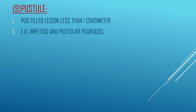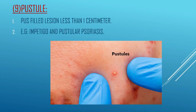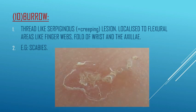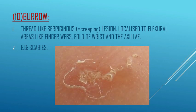The next one is the pustule — as the name suggests, it is a pus-filled lesion less than 1 centimeter. Next are burrows — these are thread-like, serpiginous (creeping) lesions. They are the characteristic lesions of scabies and are localized to flexural areas such as finger webs, folds of the wrist, and the axillae.